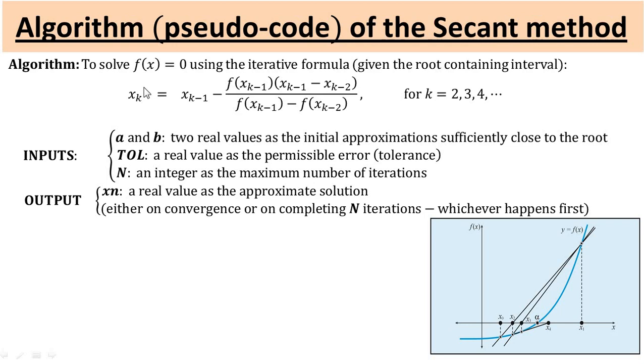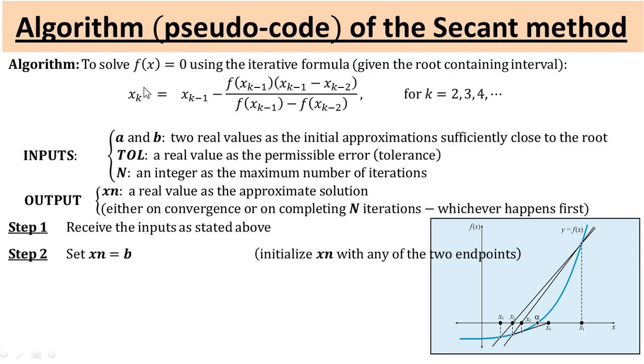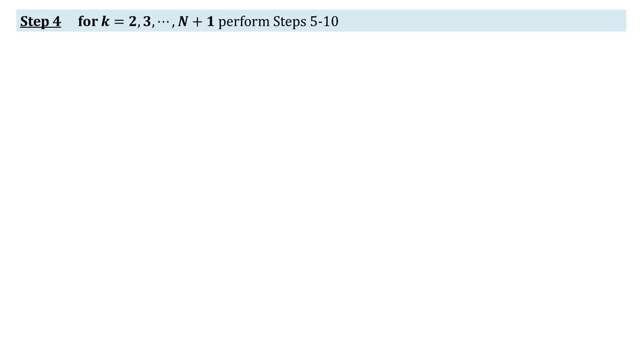As step one, we can receive the inputs as stated above. As step two, we copy one of the two approximations as the latest root and we call it xn. Next we copy the two approximations as x0, x1 and evaluate our function on these two points x0, x1 and we call it f(x0), f(x1).